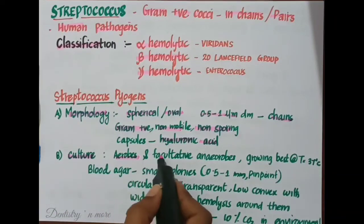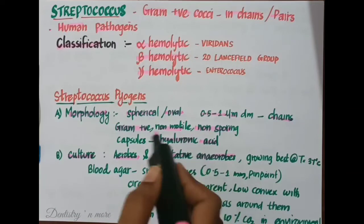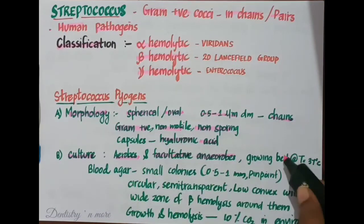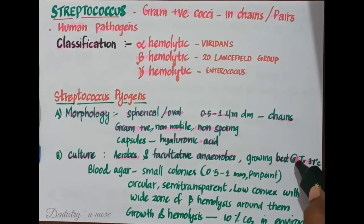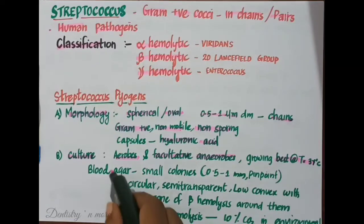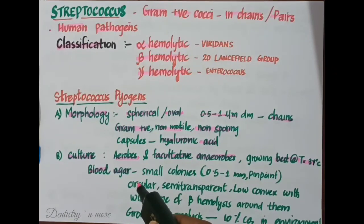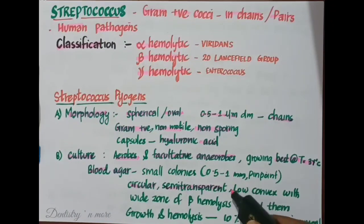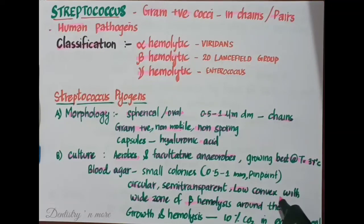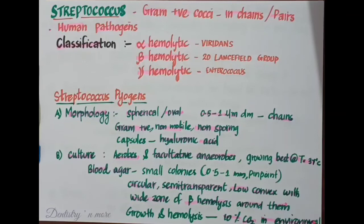Streptococcus pyogenes are aerobes and facultative anaerobes, growing best at 37°C. They grow only in media containing blood, serum, or agar. On blood agar they produce small colonies of 0.5 to 1 mm, pinpoint, circular, semi-transparent, low convex, with a wide zone of beta hemolysis. Growth and hemolysis are promoted by 10% CO₂ in the environment.